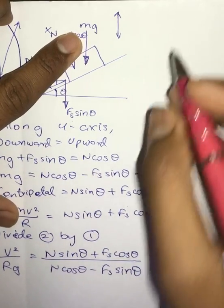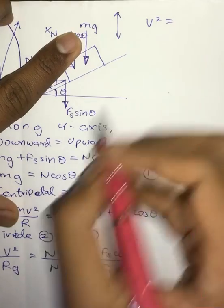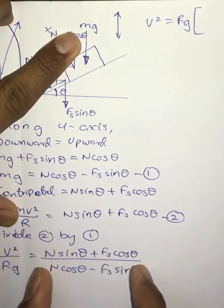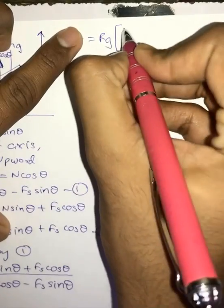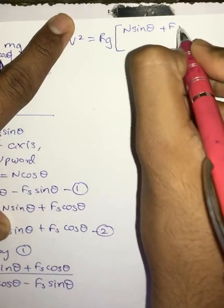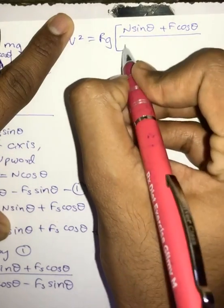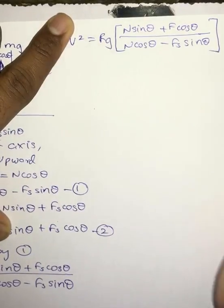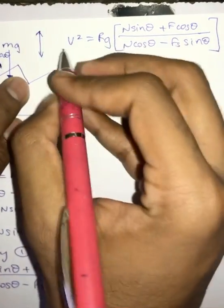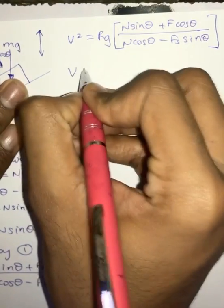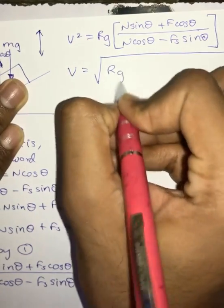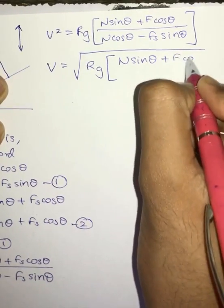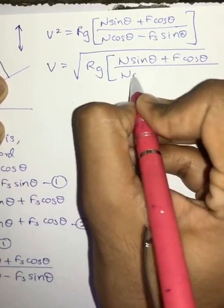From this equation, v² equals rg multiplied by the same expression: (N sinθ + Fs cosθ) / (N cosθ − Fs sinθ), after taking rg to the right-hand side.